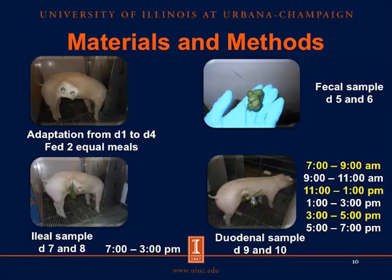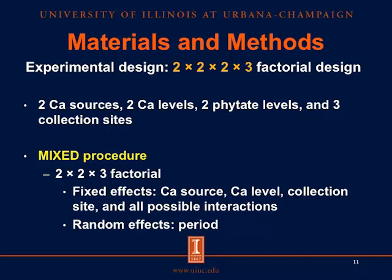The pigs were fed twice per day and had an adaptation period for the first four days. Fecal samples were collected on days 5 and 6, ileal samples were collected on days 7 and 8, and duodenal samples were collected on days 9 and 10. This is the experimental design: a 2×2×2×3 factorial with two calcium sources, two calcium levels, two phytate levels, and three collection sites.